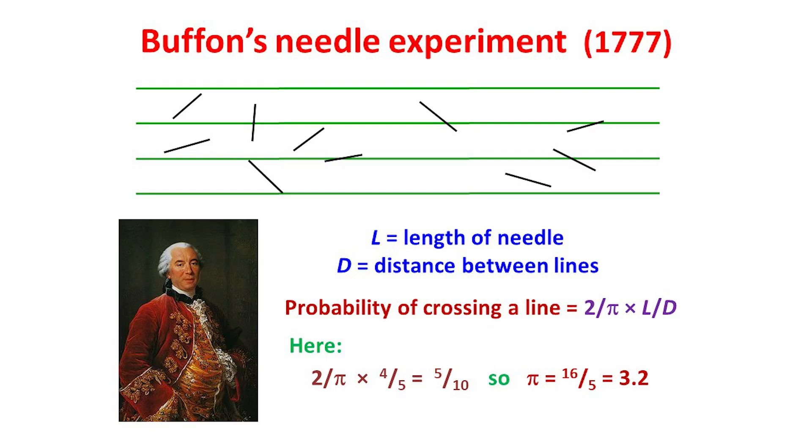Here, for example, L over d is 4/5, and exactly 5 of the 10 needles cross lines, so 2 over π times 4/5 equals 5/10. This gives us π equals 3.2, which isn't too bad a result for only 10 needles.